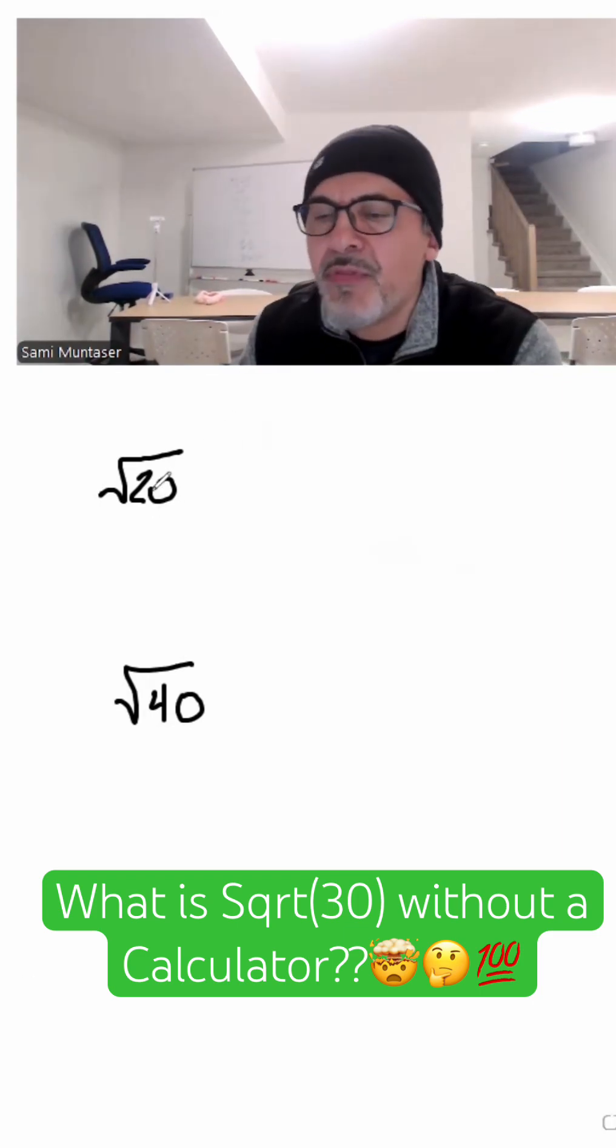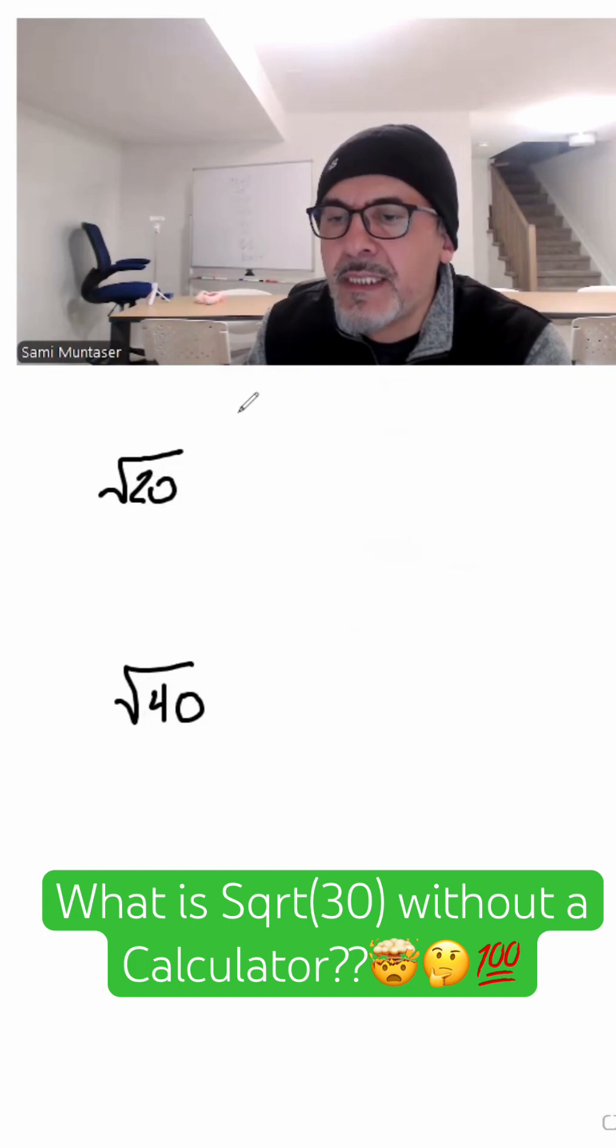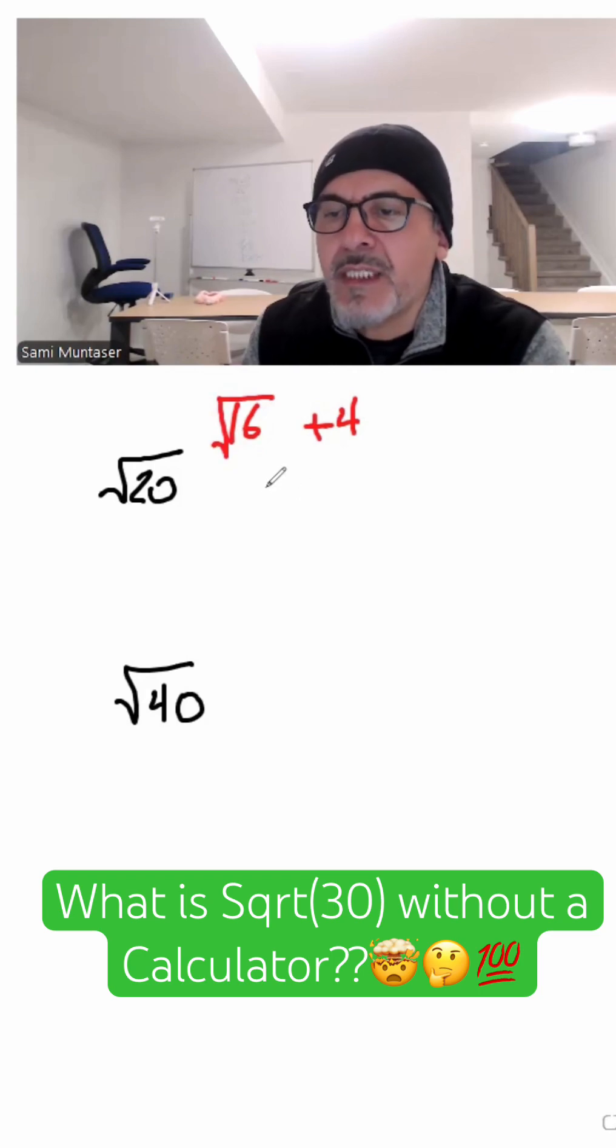So the closest perfect square to 20 is 16 with a 4 as a remainder. So what's the square root of 16? That is 4.